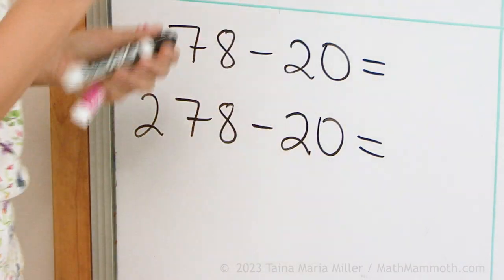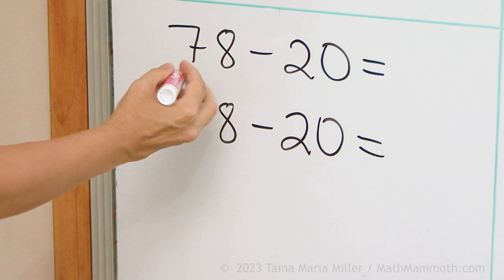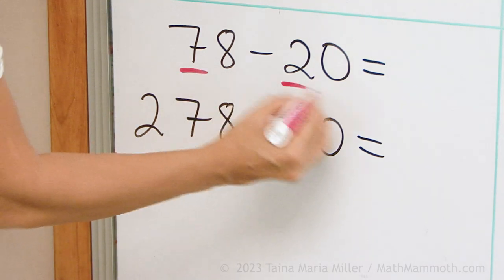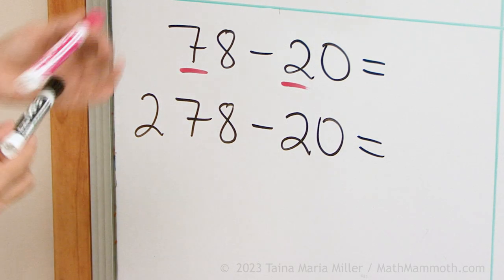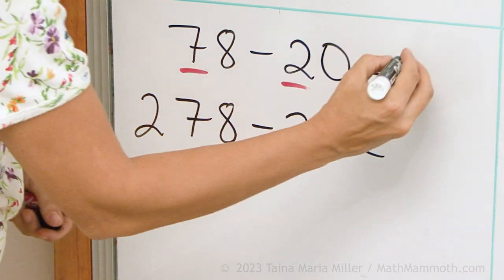78 minus 20. You remember this, you just think of the tens. The 7 and the 2, 7 tens minus 2 tens, 5 tens, right? And then there's the 8, that does not change.